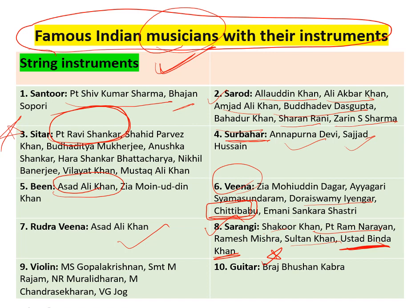Violin: M.S. Gopal Krishnan, Shrimati M. Rajam, R.N. Murlidharan, M. Chandrasekaran, and V.G. Jog. Then the last string instrument is Guitar: Brij Bhushan Kabra. So these were the famous names associated with string instruments under Indian classical music.